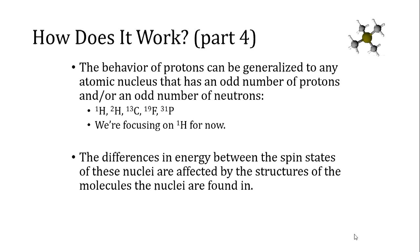The behavior of protons can be generalized to any atomic nucleus that has an odd number of protons or, and or, an odd number of neutrons. Common nuclei in organic chemistry that are examined this way are the 1H or typical hydrogen nucleus, the 2H deuterium, this is the heavier isotope of hydrogen, carbon-13, so one of the isotopes of carbon, 19 fluorine, the major isotope of fluorine.